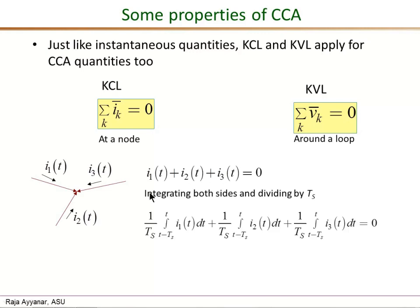Now just take the integration of both the left hand side and the right hand side and divide by Ts. That gives you this expression on the right hand side, and integral of 0 is 0. And if you look at each of these terms, they are nothing but the first term is I1 bar, second is I2 bar, the third is I3 bar.